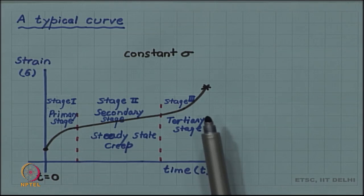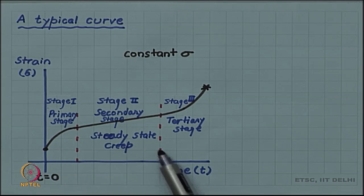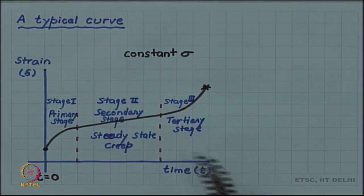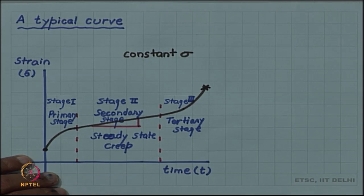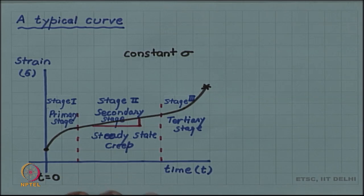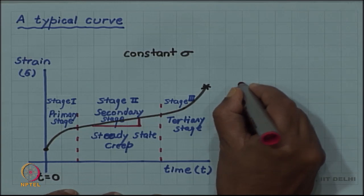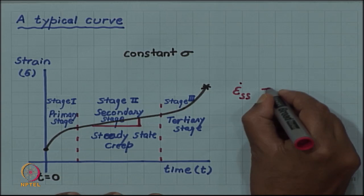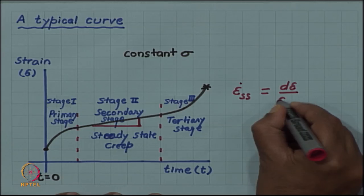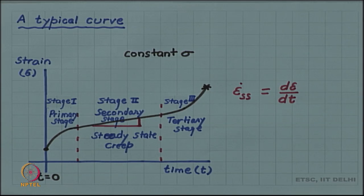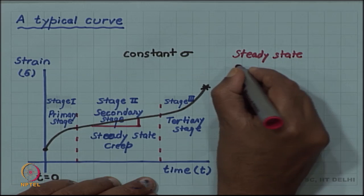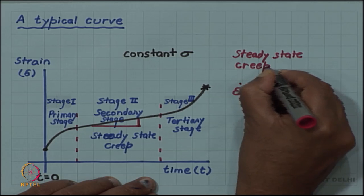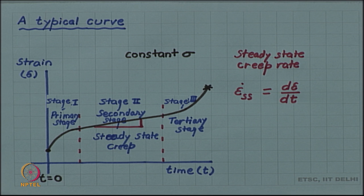We have stage 1, stage 2, and stage 3: primary, secondary, and tertiary. The secondary state also known as steady state creep because the strain rate is constant. This constant strain rate is important in the design of creep design or creep life of material. This is called the steady state strain rate, which is the slope of the curve in the steady state regime. This is a typical creep curve.